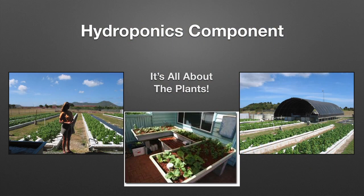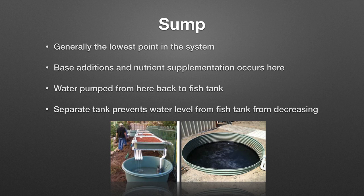The hydroponic component — one thing you'll notice is that the majority of your system footprint is going to be your plants. Your primary crop in an aquaponic system is going to be plants. The sump tank is generally the lowest point of the system. This is where we do any base additions like calcium, potassium, and iron to the system. Water collects here and is then pumped back into the fish tank. This separate tank prevents the water level in the fish tank from decreasing — if something happens and your pump or sump goes dry, your fish are protected.